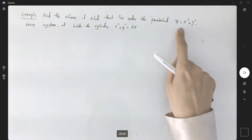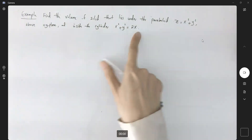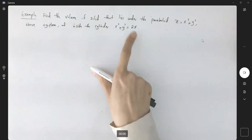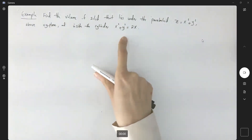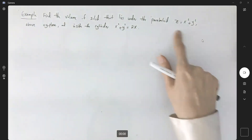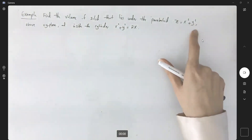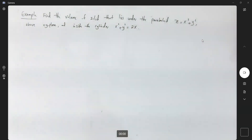Here we have x squared plus y squared, a relation that can be converted into polar form. So our preference is using polar coordinates. To use polar coordinates, we set x equals r cosine theta, y equals r sine theta, and determine the boundaries for r and theta.